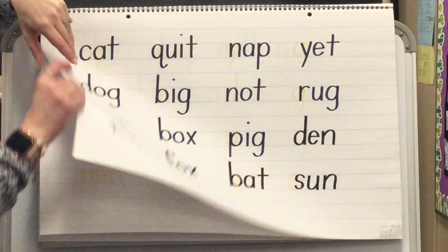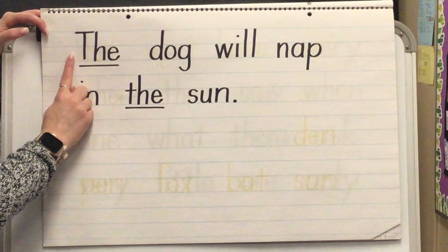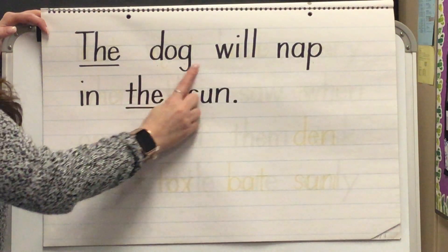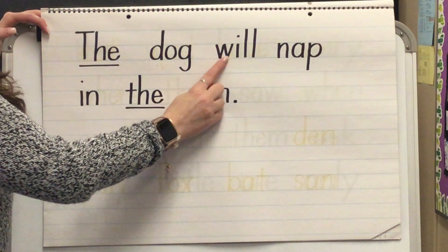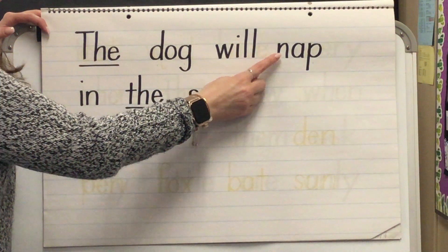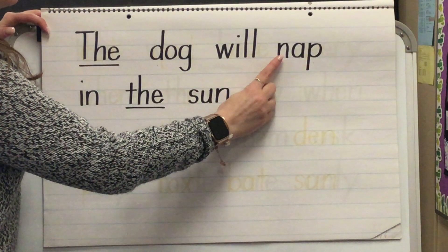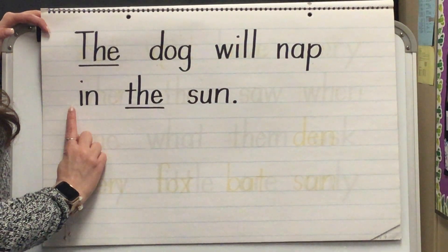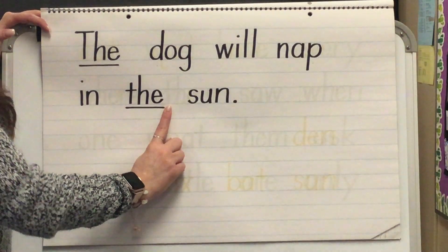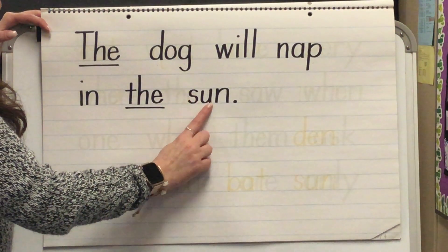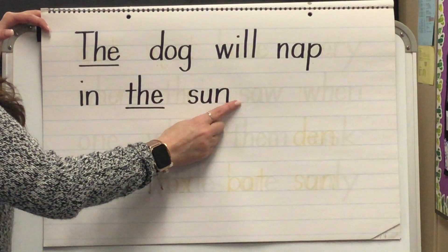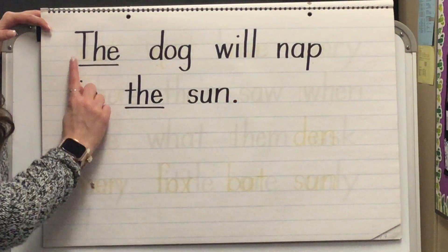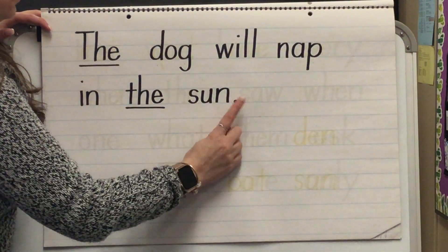Now we're going to read these words in a sentence. Ready? Word — yes, the. Blend. Word — yes, dog. Blend. Word — yes, will. The dog will. Blend. Word — yes, nap. Blend. Word — yes, in. Word — yes, the. Blend. Word — yes, sun. My turn: The dog will nap in the sun. Your turn. Nice job.